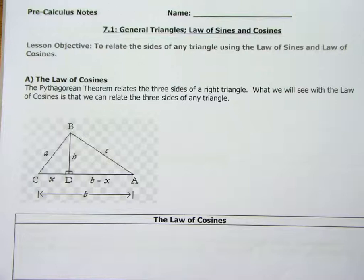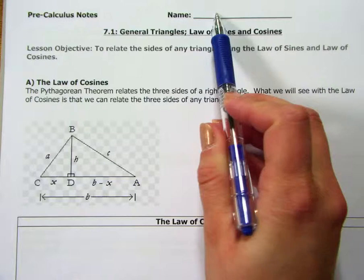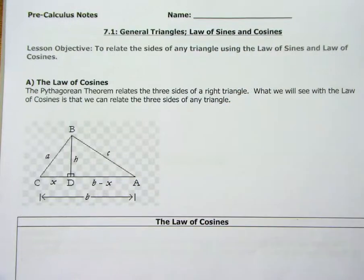What we are going to continue on is expanding our trigonometry beyond right triangles. The sine and cosine ratios we're going to look at today are the law of sines and cosines, which relate the three sides of any triangle. This does not necessarily have to be a right triangle, which is nice because we haven't really had any good ways of finding non-right triangles.